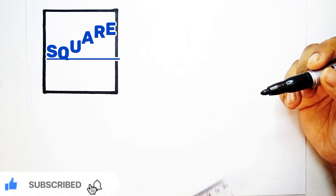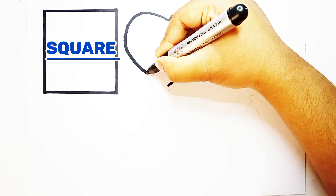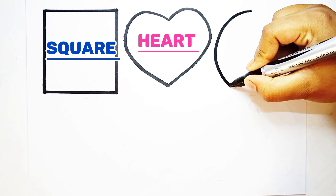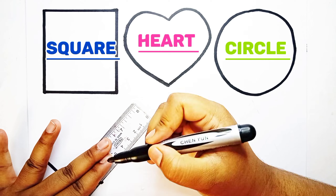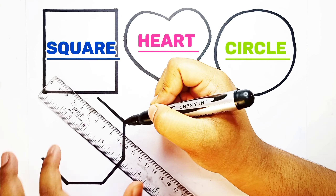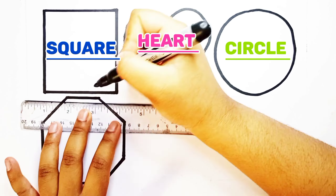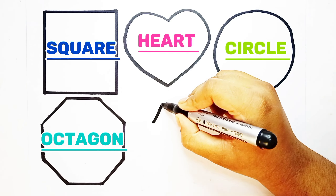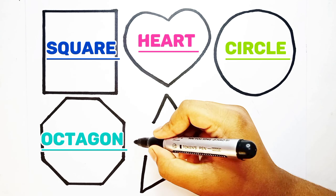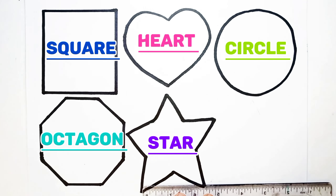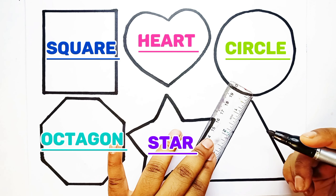This is a square. This is a heart. This is a circle. This is an octagon. This is a star. This is a triangle.